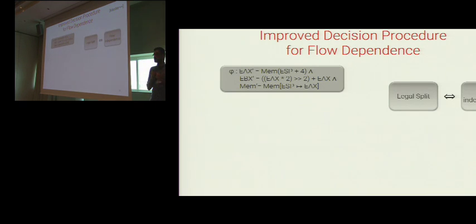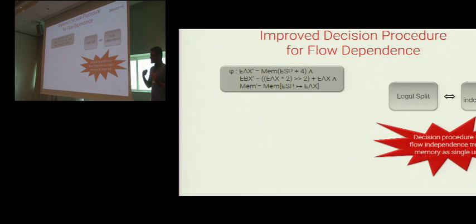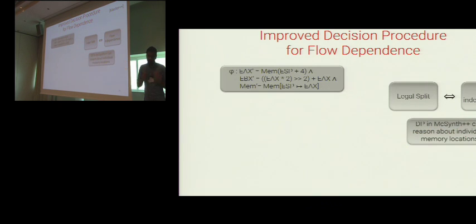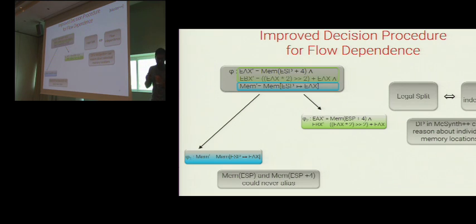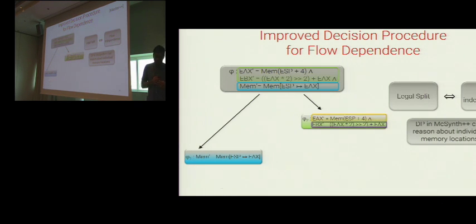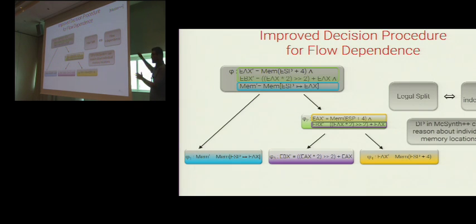Recall that a sufficient condition for legality of a split is flow independence, and MixSynth's decision procedure treated memory as a single unit, conservatively discarding legal splits. MixSynth++ uses an improved decision procedure capable of reasoning about individual memory locations. So MixSynth++ splits phi into phi 1 and phi 2, and this improved procedure determines that the location updated by phi 1 could never alias with the location used by phi 2 — so there is no extraneous flow dependence from phi 1 to phi 2, making it a legal split. Then MixSynth++ further splits phi 2 into phi 3 and phi 4, again because there is no flow dependence from phi 3 to phi 4.